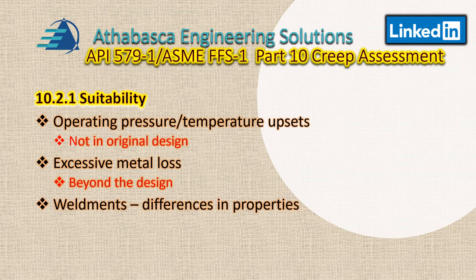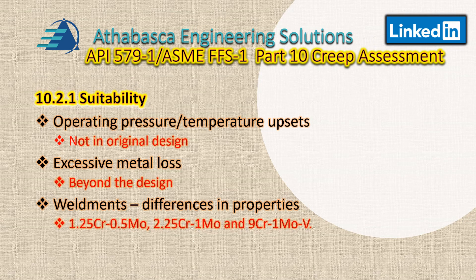Weldments are components with welds that have significantly different properties in the weld metal, the heat-affected zone (HAZ), and the base metals. You get this with certain low-alloy heat-resistant steels — for example, 1¼ chrome ½ moly, 2¼ chrome 1 moly, and higher-level chromiums with vanadium.